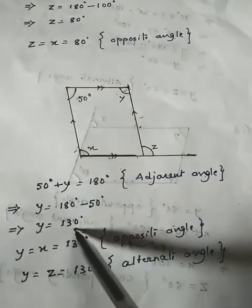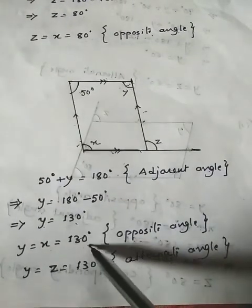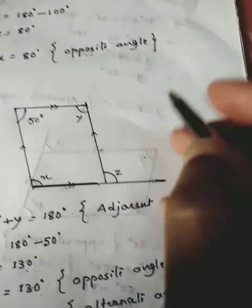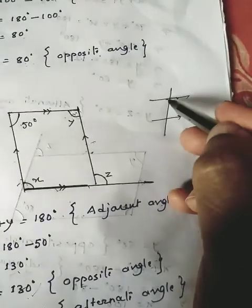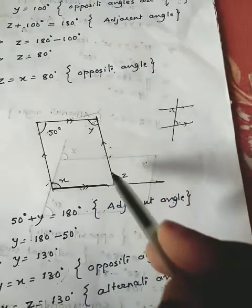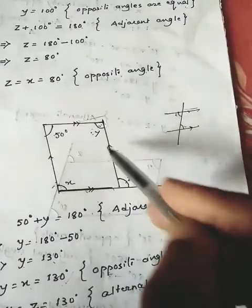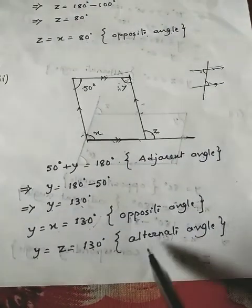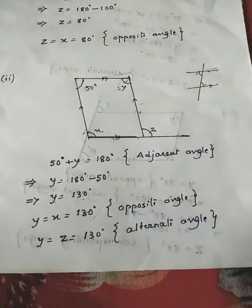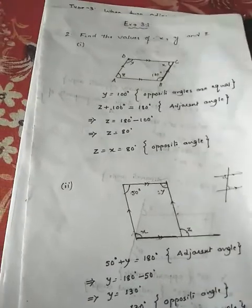Since x is opposite to y, y equals x equals 130 degrees — reason: opposite angles. Now for z: if you remember parallel line properties from junior classes, these two sides are parallel lines and the diagonal is a transversal, making these two angles alternate angles. Alternate angles are always equal, so y equals z equals 130 degrees — reason: alternate angles. Parallel line properties are also very important here.